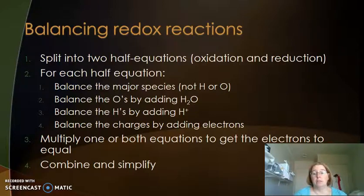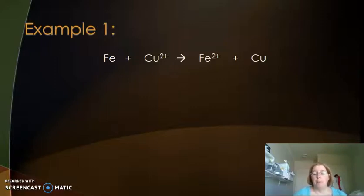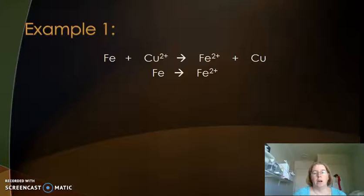Let's look at some examples. This first one is a really simple example, and you should actually be able to balance this one by inspection, but just to work through the process: the first thing we do is split it into two half equations — iron turning into Fe2+, and copper 2+ turning into copper metal.